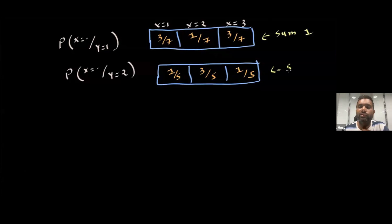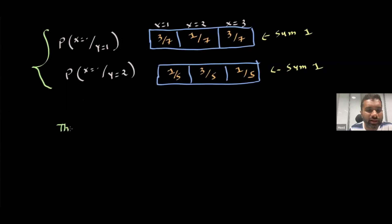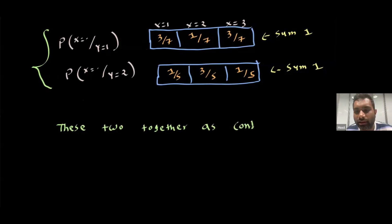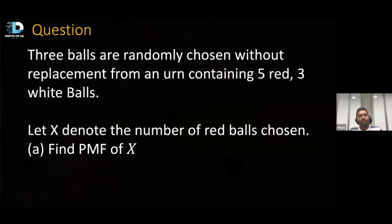The key point is: when conditioning on a certain random variable, we condition for every event that random variable is taking. Y takes two values (1 and 2), giving two different events and two different conditional distributions. Together these can be referred to as the conditional distribution X given Y — meaning, for every possible value Y is taking, consider that as an event and find the probability distribution of X.